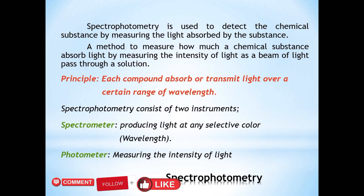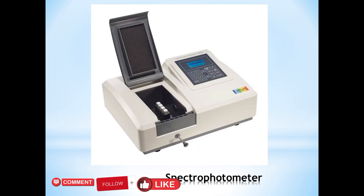Spectrophotometry is used in cell biology for the determination of various types of amino acids. There are 20 different types of amino acids present in all living organisms, including bacteria, protists, fungi, plants, and animals. These amino acids absorb specific wavelengths of light and can be determined with the help of spectrophotometry.